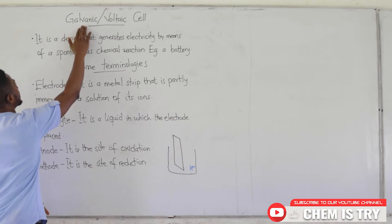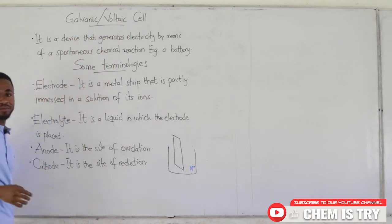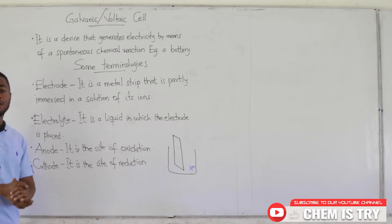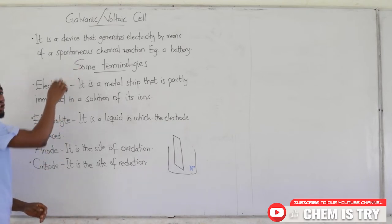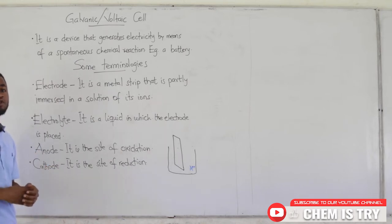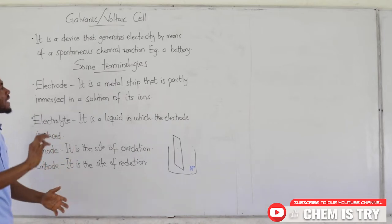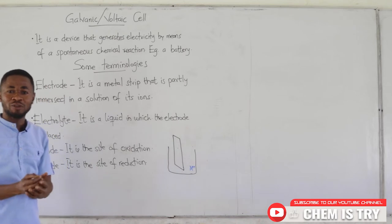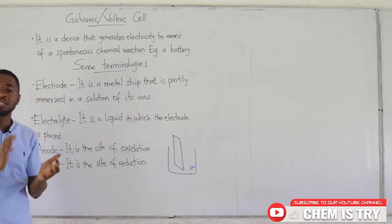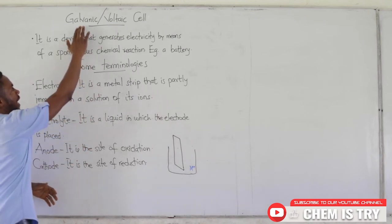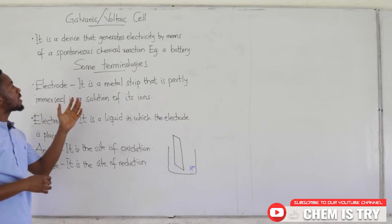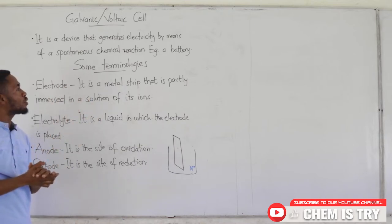Let's talk about the galvanic or voltaic cell. A galvanic or voltaic cell is a device that generates electricity by means of a spontaneous chemical reaction. The key word here is spontaneous — we don't have to force the chemical reaction to happen. It's a reaction happening on its own, but it ends up generating electricity. An example is a battery — the batteries we put in our torches and our phones are a classical example of a galvanic or voltaic cell. We will talk in depth about these cells and have a look at what really happens in there.